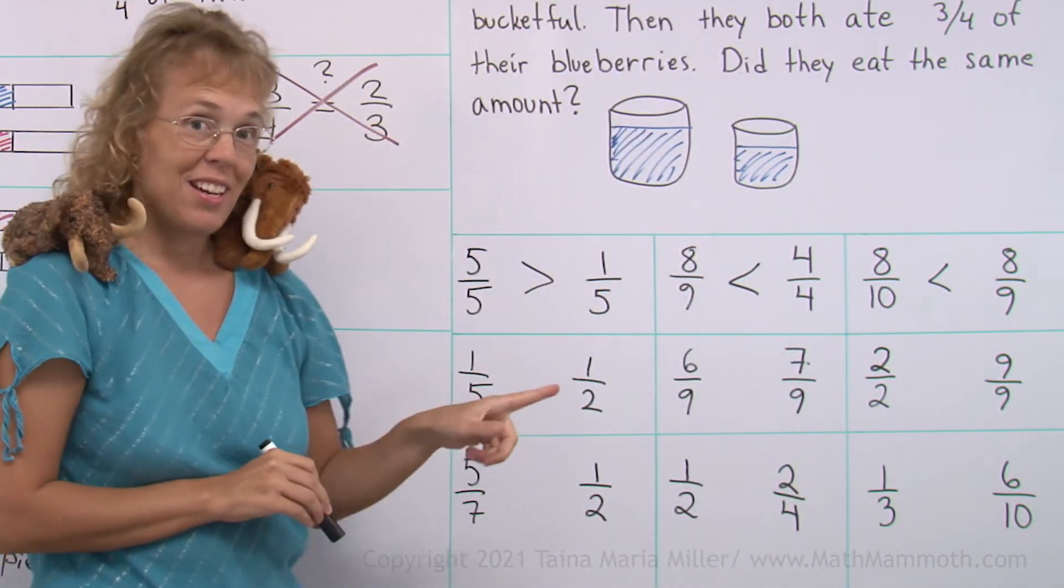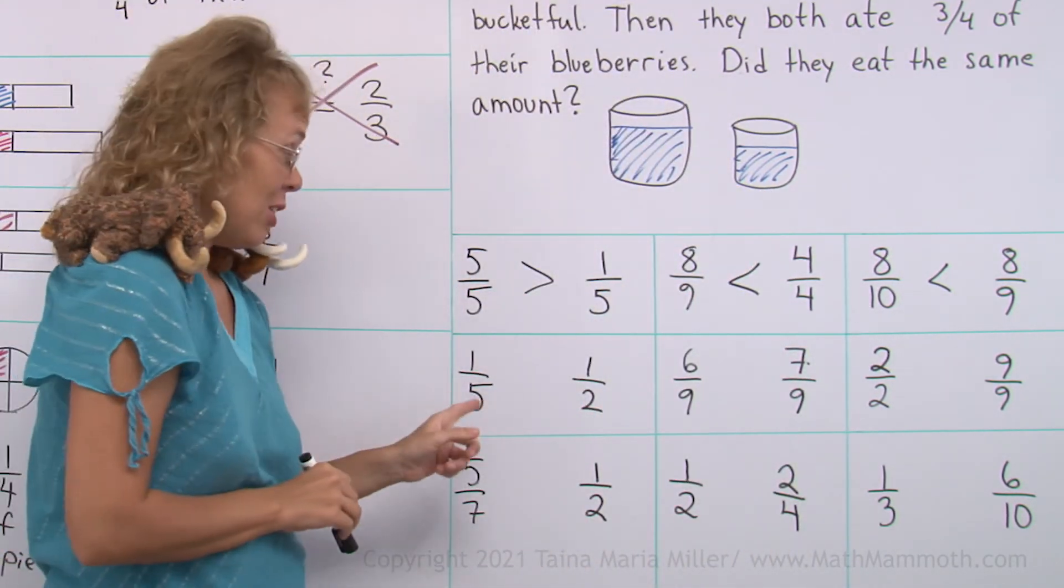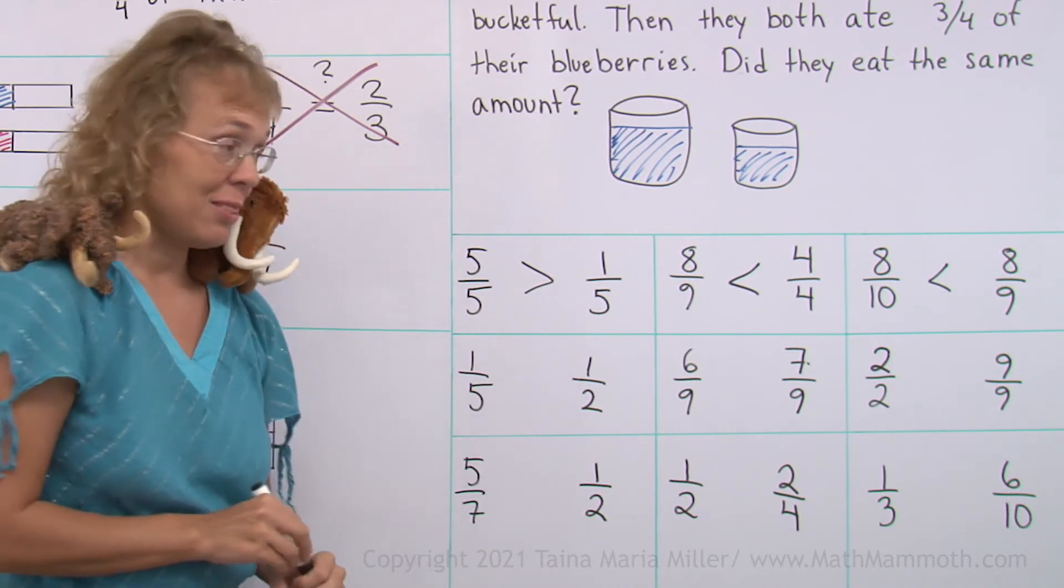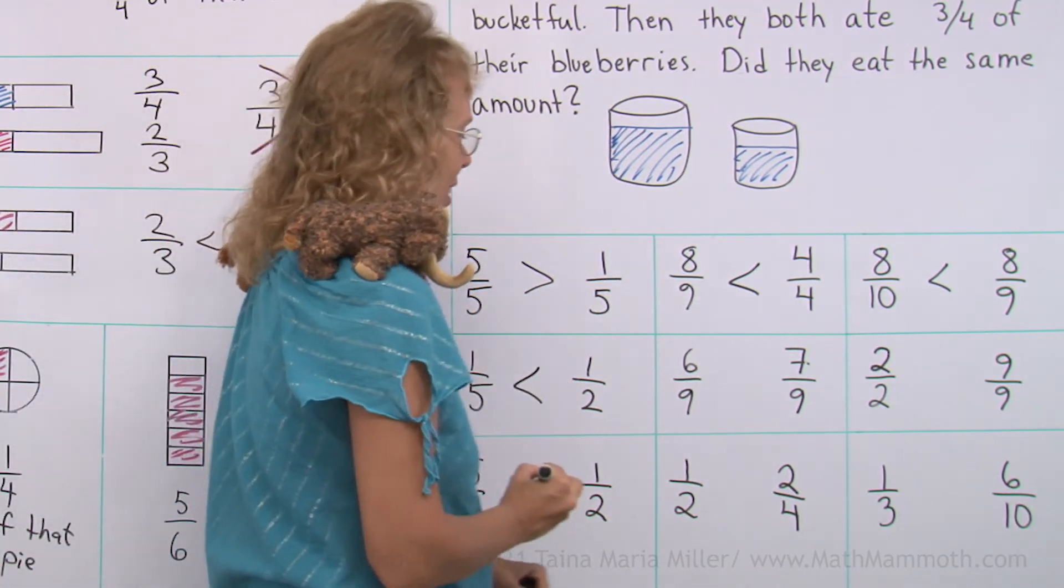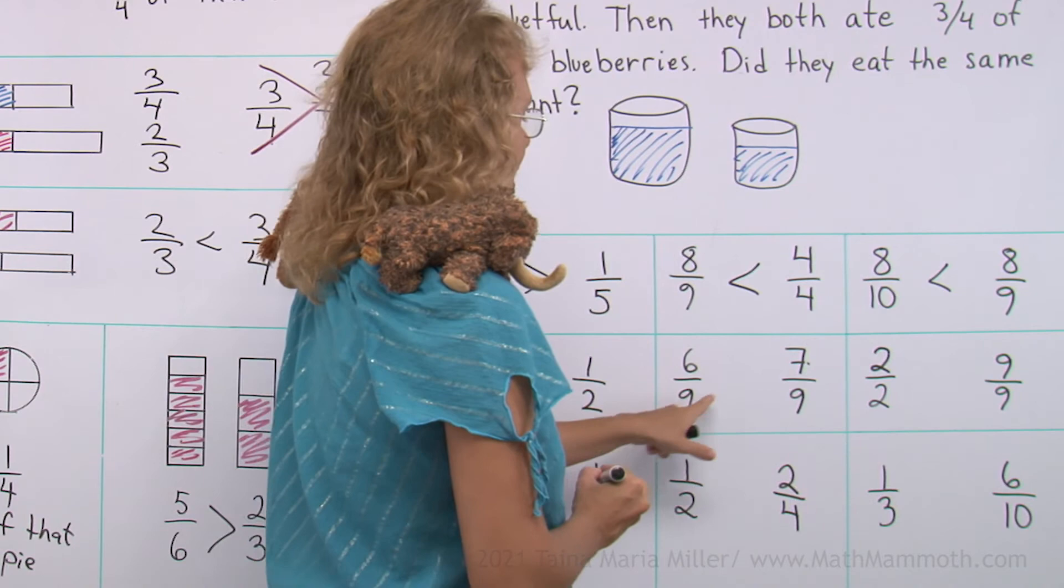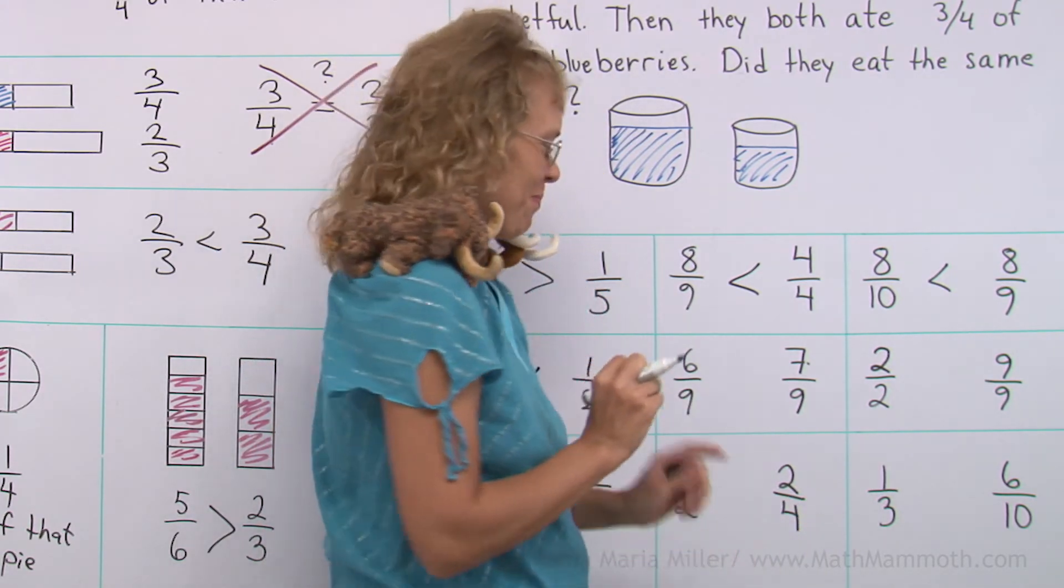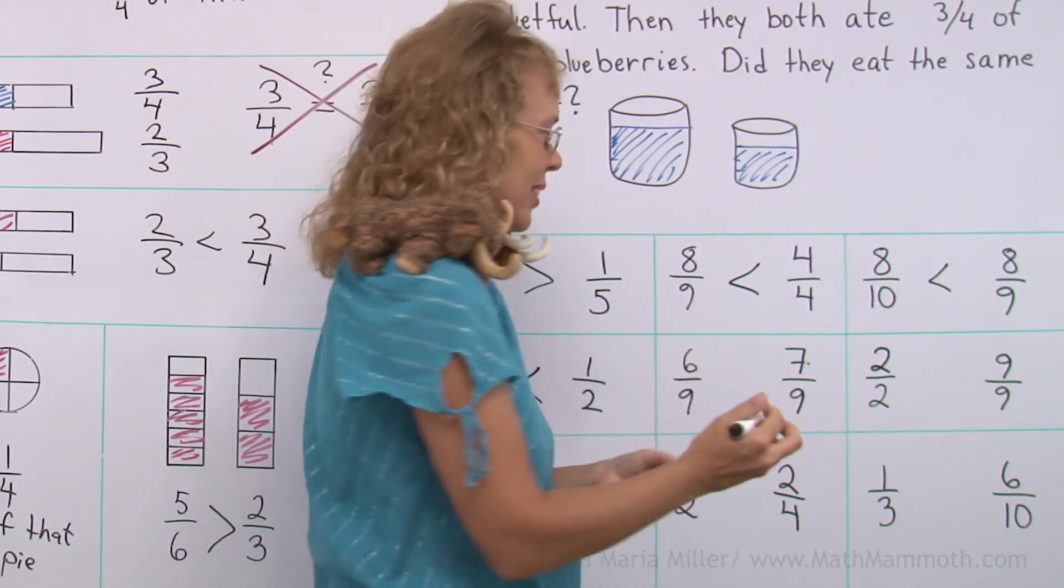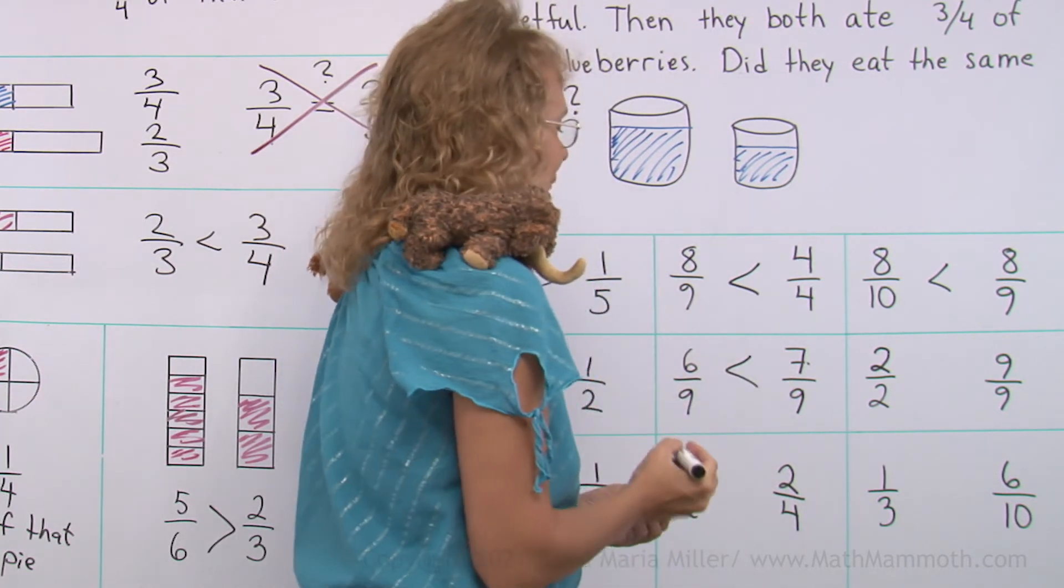One-fifth and one-half, that's easy, right? A fifth is a much smaller piece than one-half. Six-ninths, seven-ninths, that's easy again. Ninths and ninths, the same kinds of pieces. Seven pieces is more than six.